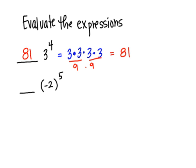You could also just multiply down the line and say 3 times 3 is 9, 9 times another 3 is 27, 27 times another 3 is 81.